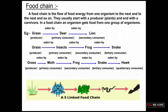A second example: grass is eaten by an insect, the insect is eaten by a frog, and the frog is eaten by a snake. A third example: grass is eaten by a moth, the moth is eaten by a frog, the frog is eaten by a snake, and the snake is eaten by a hawk. This is how energy flows through a food chain.